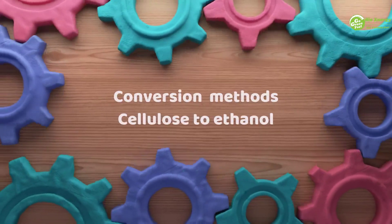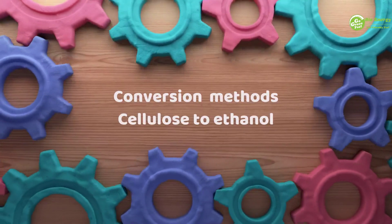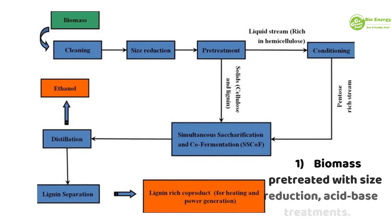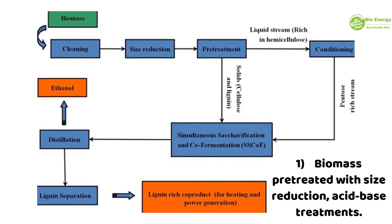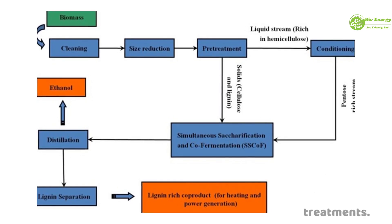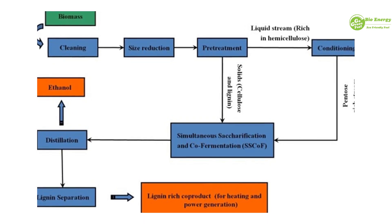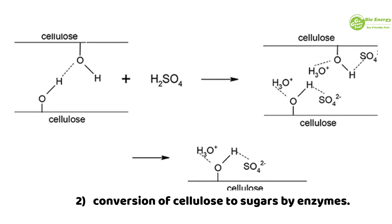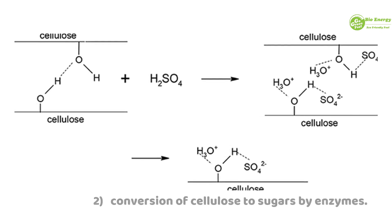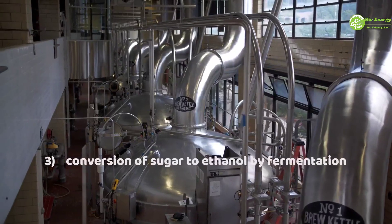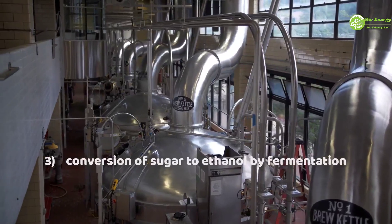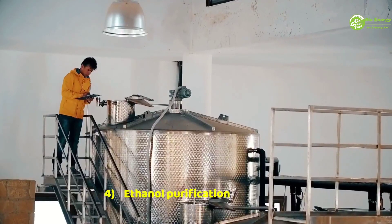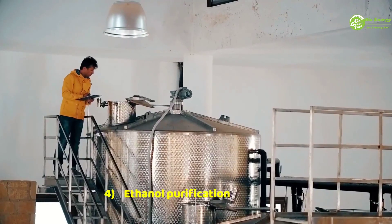Conversion methods from cellulose to ethanol: 1. Biomass pre-treated with size reduction and acid-based treatments. 2. Conversion of cellulose to sugars by enzymes. 3. Conversion of sugar to ethanol by fermentation. 4. Ethanol purification.